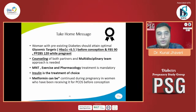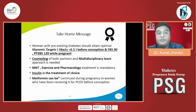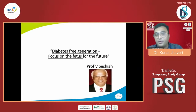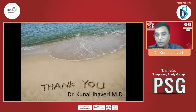In conclusion: women with pre-existing type 2 diabetes should attain optimal glycemic target of HbA1c less than 6.5 before conception — until then, please follow contraception. Fasting of 90 and postprandial of 120 while pregnant are mandatory per DIPSI guidelines. Counseling of both partners and a multidisciplinary team approach are essential. Medical nutrition therapy, exercise, and pharmacotherapy are all integral parts of treatment. Insulin is the treatment of choice. Metformin may be continued for women receiving it for PCOS for conception, but it is still not validated for early pregnancy. I end with Professor V. Shishya's words: for a diabetes-free generation, focus on the fetus for the future. Please control sugars well during pregnancy. Thank you so much.